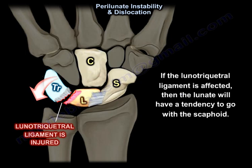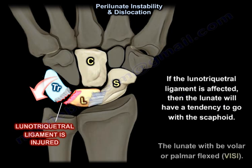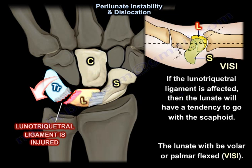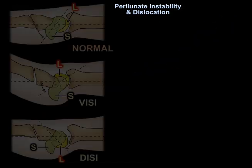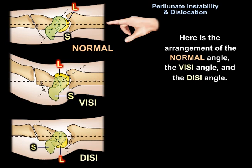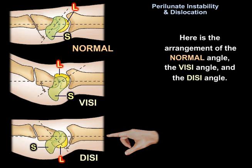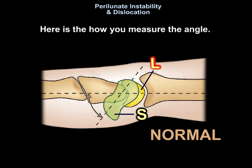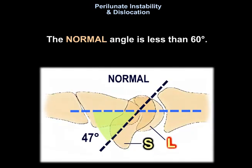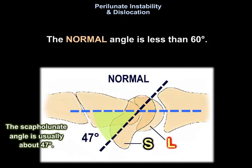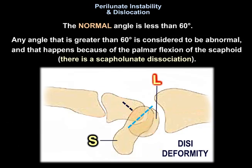If the lunotriquetral ligament is affected, the lunate will have a tendency to go with the scaphoid, so the lunate will be volar flexed or palmar flexed — that is called VISI. The normal scapholunate angle is less than 60 degrees, usually about 47 degrees. Any angle greater than 60 degrees is abnormal and occurs because of palmar flexion of the scaphoid, indicating scapholunate dissociation.